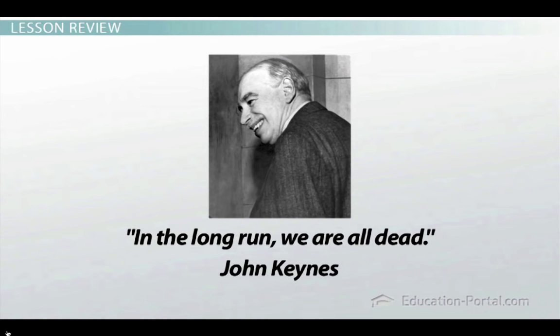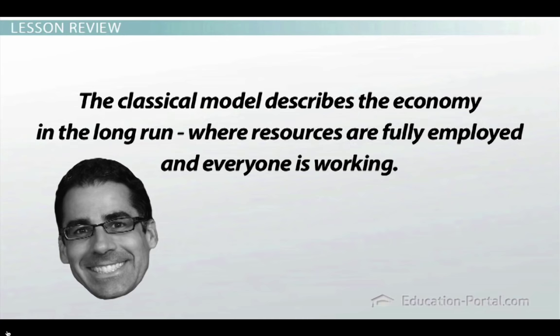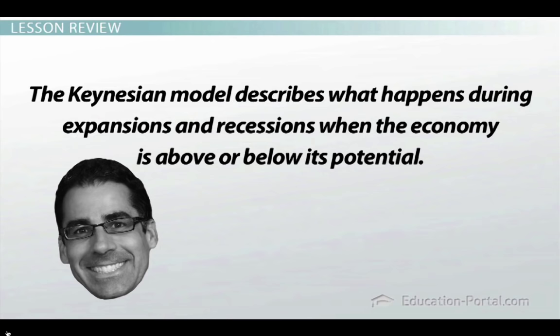Which one of these models is the correct model of the economy? Both of them are correct, because they're describing the economy at two different points in time. The classical model describes the economy in the long run, where resources are fully employed and everyone is working. The Keynesian model describes what happens during expansions and recessions in the short run, when the economy is above or below its potential.